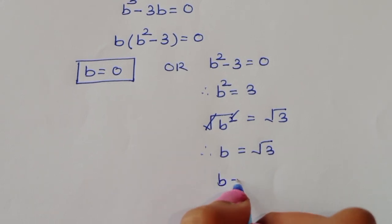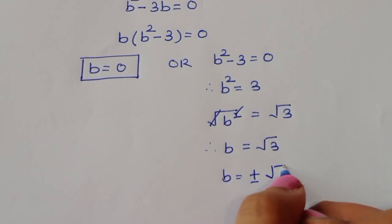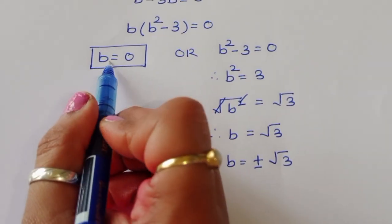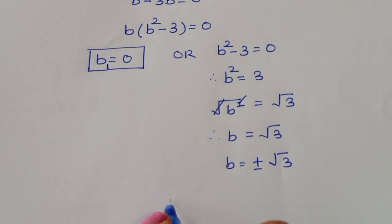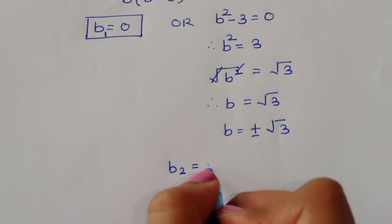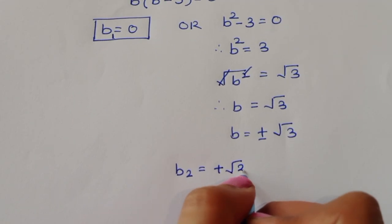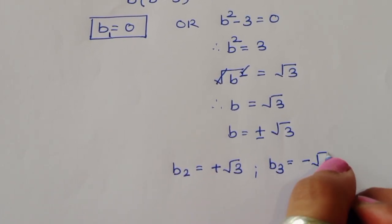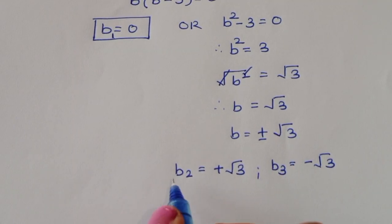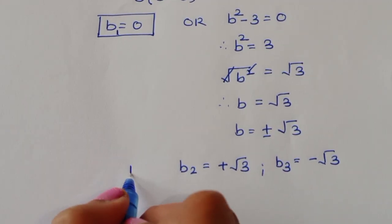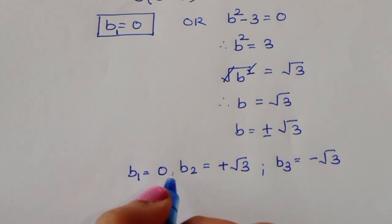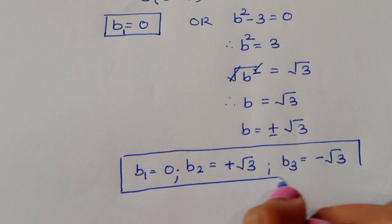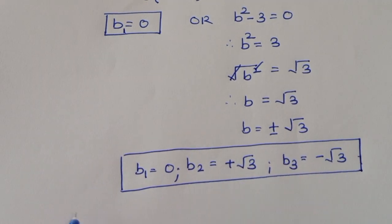Therefore b is equal to plus or minus square root of 3. So we have three values: b1 equals 0, b2 equals positive square root of 3, and b3 equals negative square root of 3. Now let's verify which ones are correct.